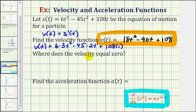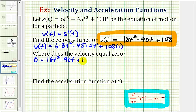This looks like it's going to be factorable. Next we're going to find when the velocity equals zero. Using our velocity function, we'll set v of t equal to zero and then solve for t. So we have zero equals 18t squared minus 90t plus 108. This is going to be factorable.